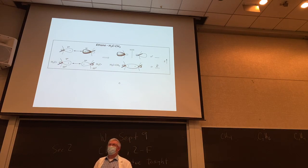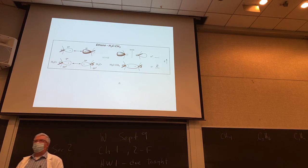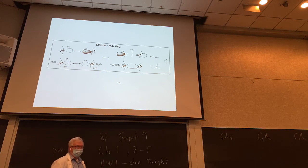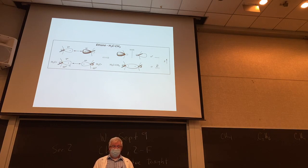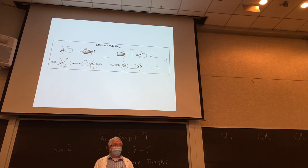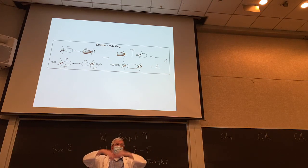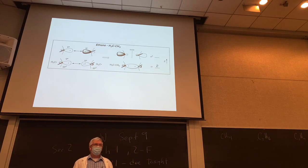Ethane — a little more complicated. Now we have two types of sigma bonds: a carbon-carbon bond and carbon-hydrogen bonds on the edges. It's still tetrahedral geometry with four bonds to each carbon. We do the same sp³ hybridization. I'm showing the two on the carbons pointing toward each other in phase — the sine of the wave equation is plus/plus, meaning they're in phase. That's constructive overlap.